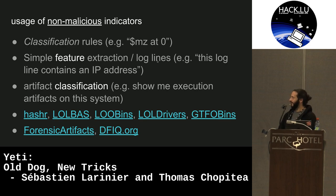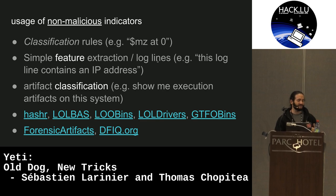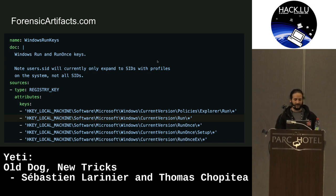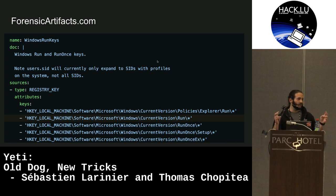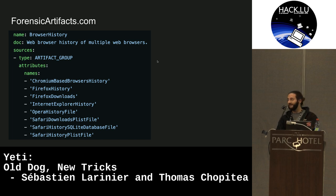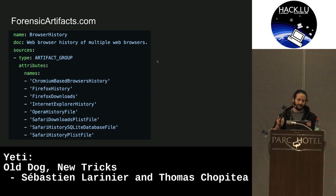Forensic artifacts are YAML files that tell you, for example, here are all the Windows run keys. For a forensic analyst this is very useful — just search for Windows run keys and it tells you what the evidence is. There's also dfiq.org, a project for structuring and orienting investigations. Forensic artifacts are available at forensicartifacts.com and are what GRR uses — our endpoint forensic system — when you ask for browsing history: it figures things out and returns whatever files match that artifact. It's a great time saver.